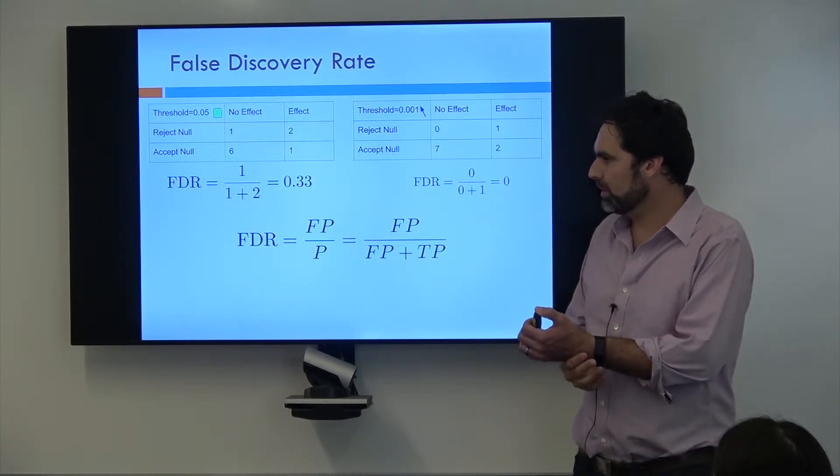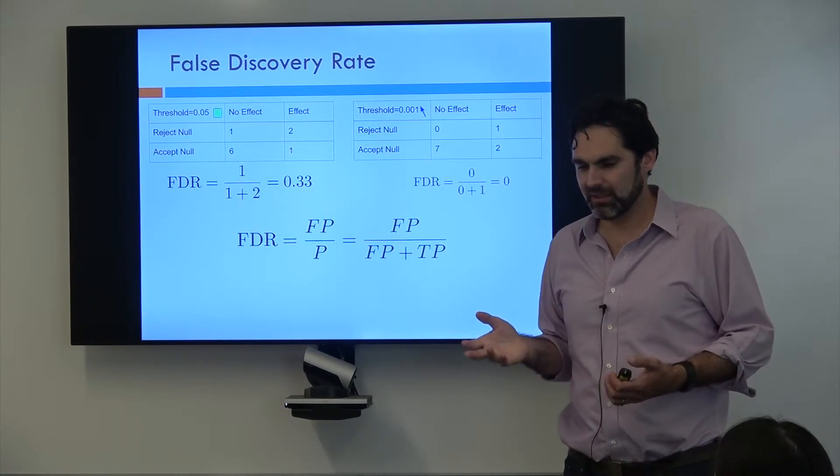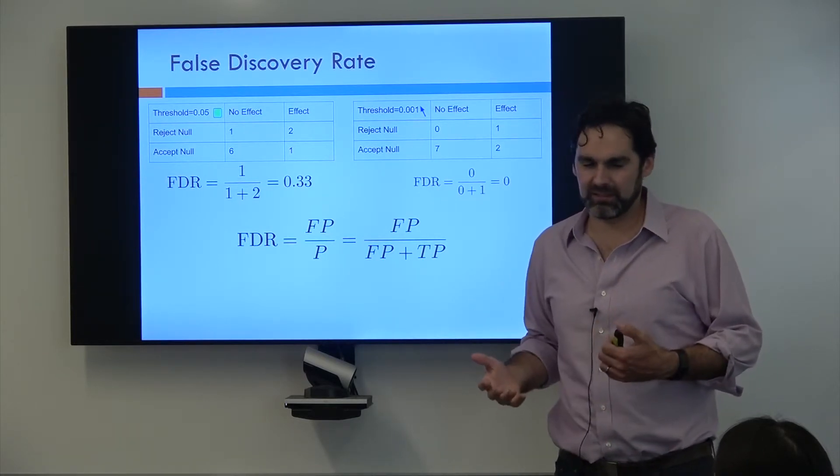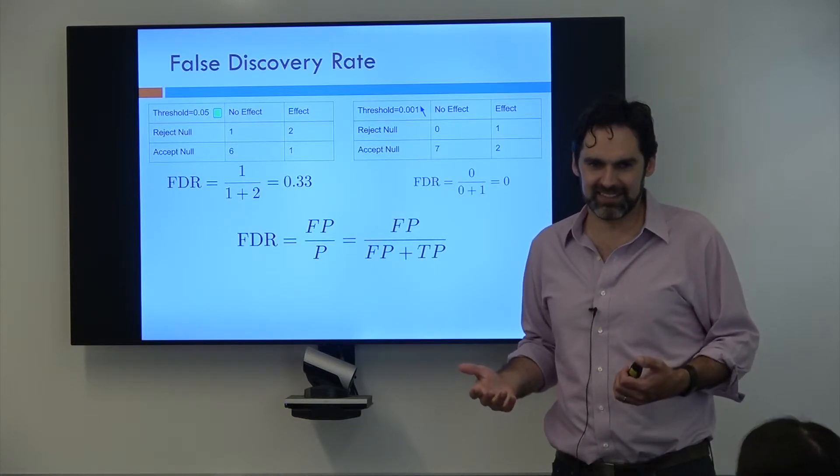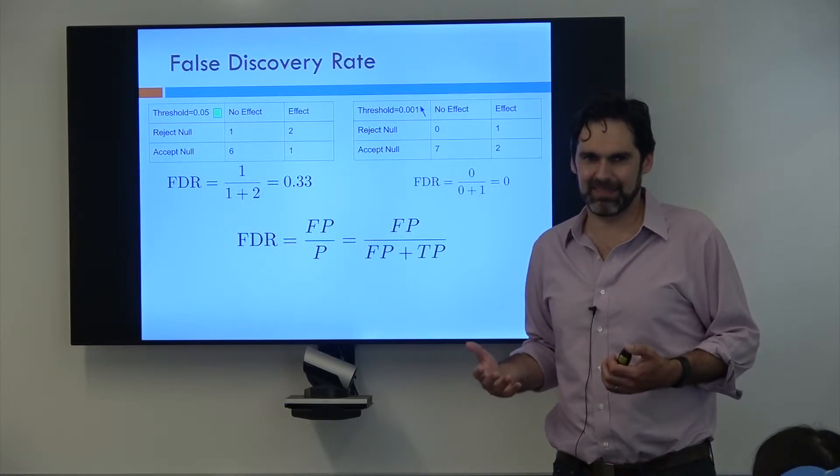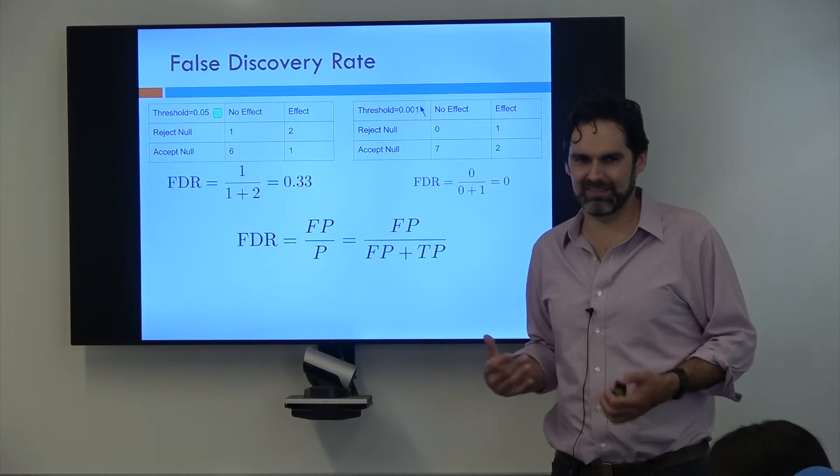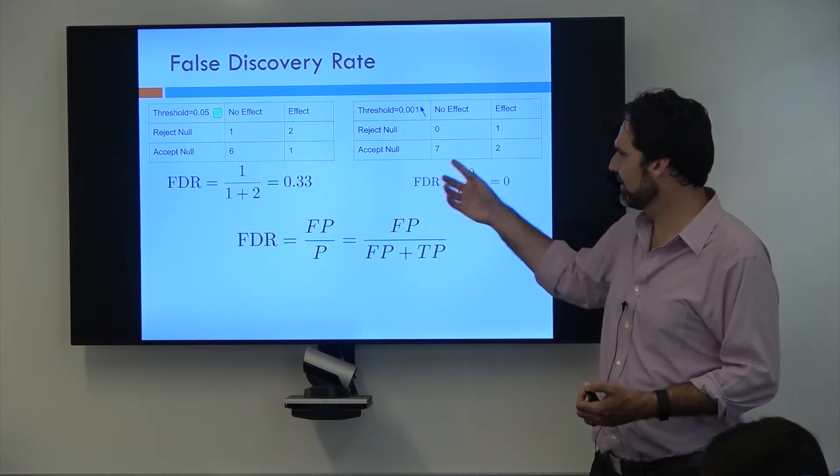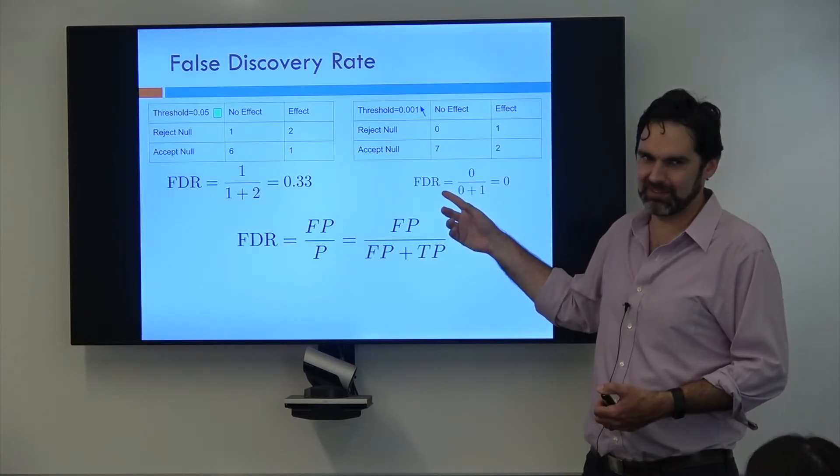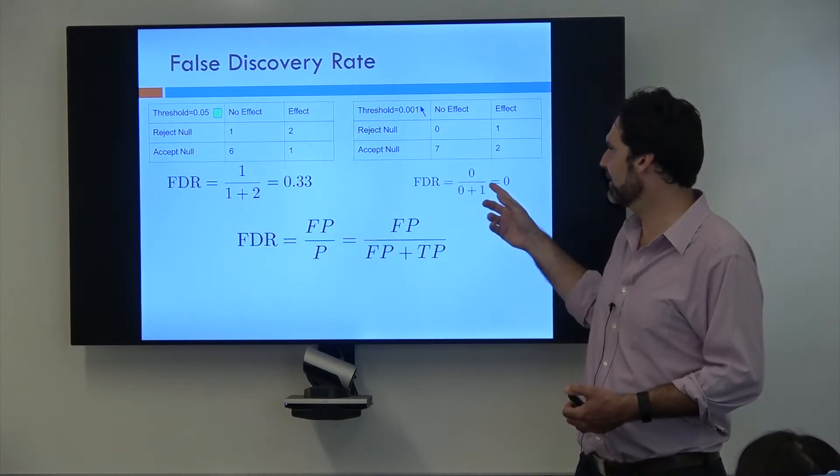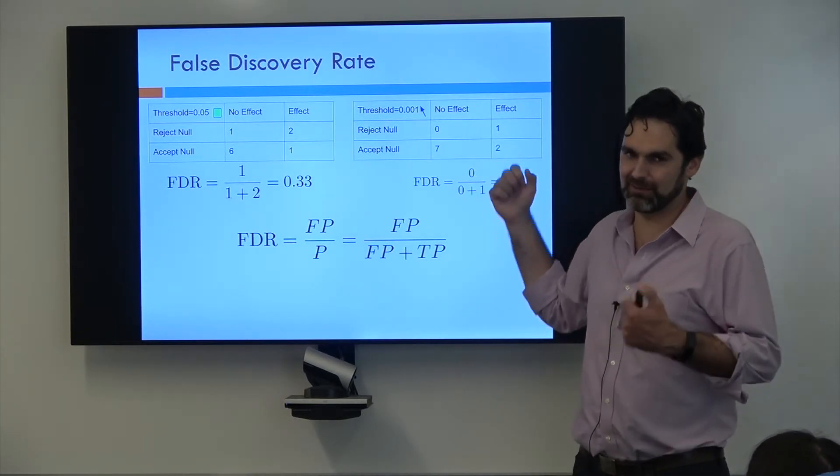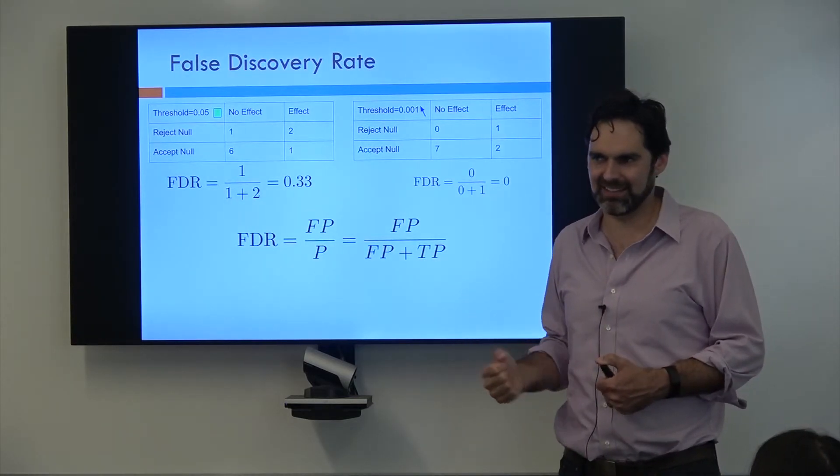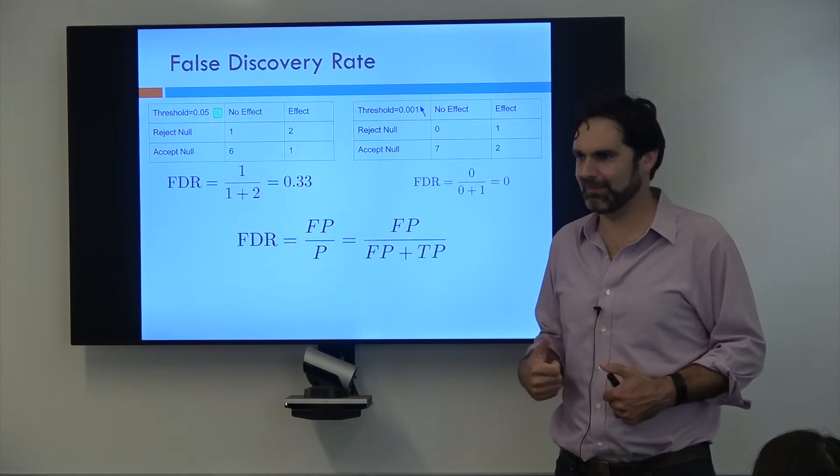And this can become a real problem if, say, you need to then follow up on all these discoveries and everything you follow up on is going to cost you like half a million dollars. You really don't want to have like 33% of all of your millions of dollars being wrong. You would much rather have something like this where your false discovery rate is zero. So it's like, you have one effect, you're really confident about it, and you do that follow up and it costs you half a million dollars, and you're like, money well spent, hopefully.